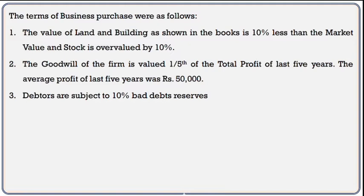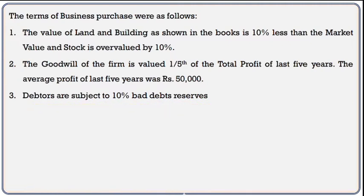Adjustment number 2: The goodwill of the firm is valued at one-fifth of the total profit of the last 5 years. The average profit of the last 5 years was 50,000. Goodwill is not directly given, so we need to calculate it. Adjustment number 3: Debtors are subject to a 10% bad debt reserve. After deducting bad debts, the remaining debtors will have a 10% bad debt reserve applied.